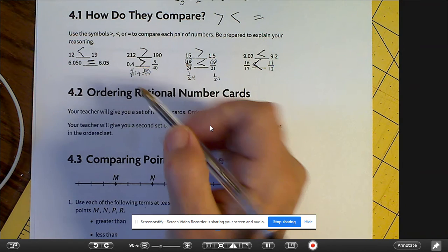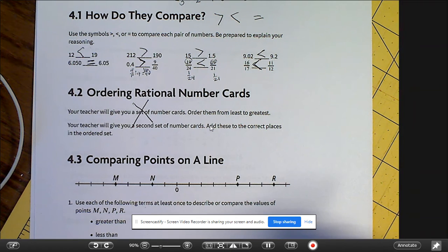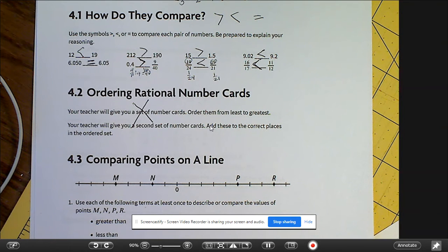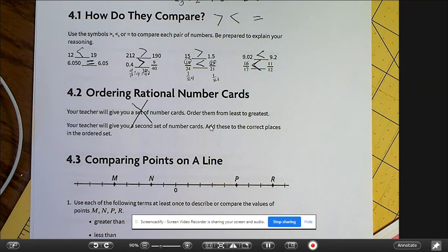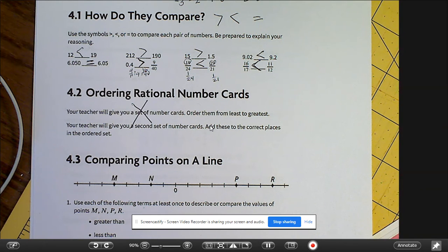All right. So we are not doing 4.2 because I'm not giving you ordering rational number cards. We're going to move on to number three. And you have to use each of the following terms at least once to describe or compare the values of points M, N, P, and R.